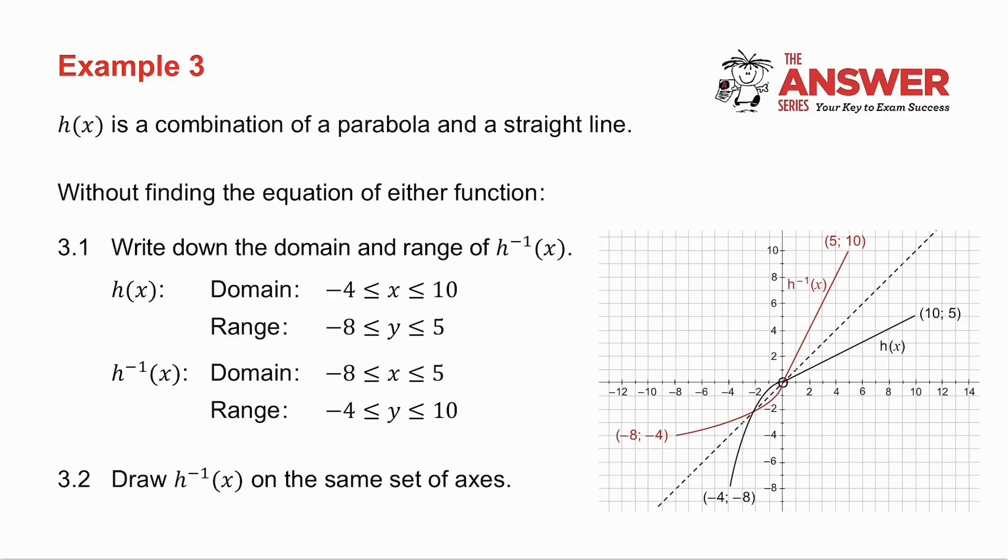In the original graph, the domain is from minus four to ten. Those are the x values I have. And the range is from minus eight to five. Those are my y values. So that means that the domain of the inverse comes from the range of the original. The range of the inverse comes from the domain of the original. And notice the domain is x, range is y.